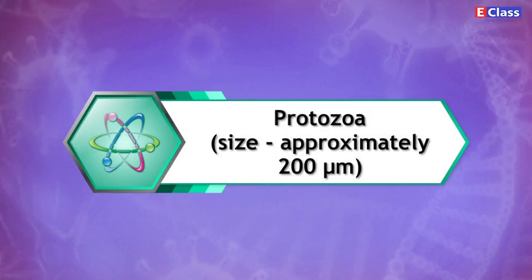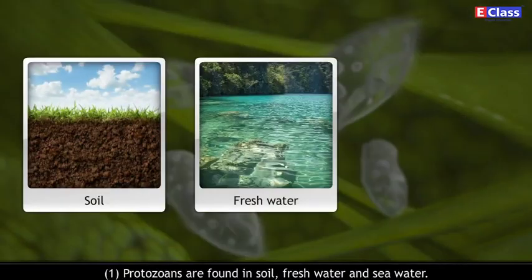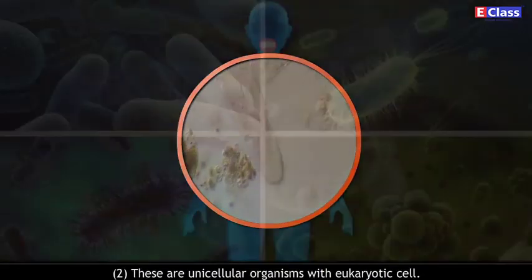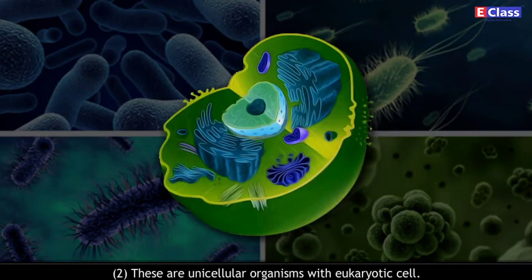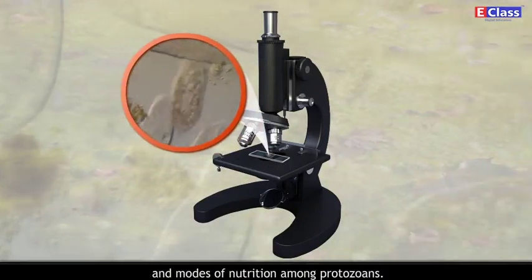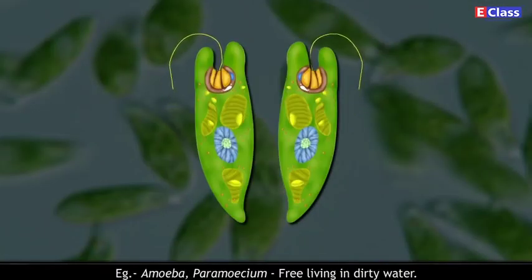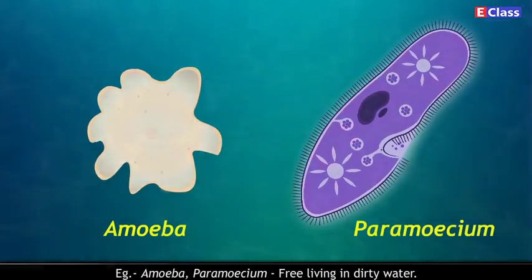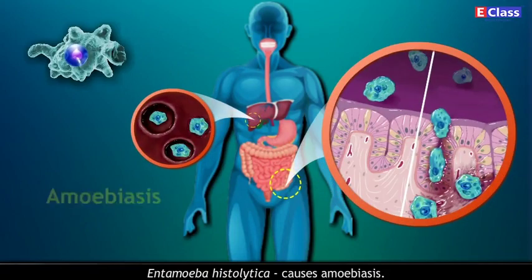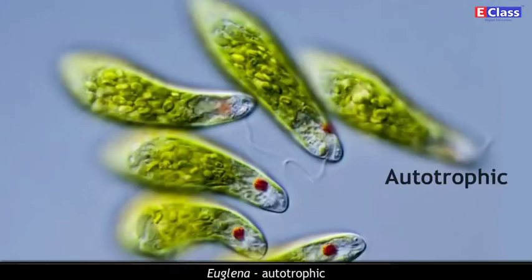Protozoa: Size approximately 200 micrometers. Protozoans are found in soil, freshwater, and seawater. Some are found in the body of other organisms and are pathogenic. These are unicellular organisms with eukaryotic cells. There is great variation in cell structure, organs of locomotion, and modes of nutrition among protozoans. These organisms reproduce by simple cell division. Examples: Amoeba and Paramecium (free living in dirty water); Entamoeba histolytica (causes amoebic dysentery); Plasmodium vivax (causes malaria); Euglena (autotrophic).